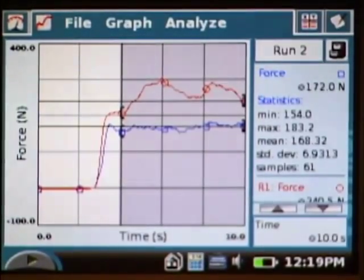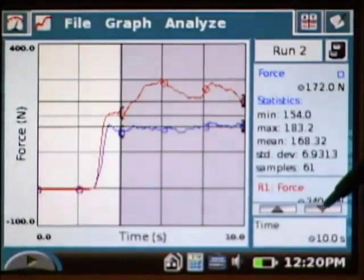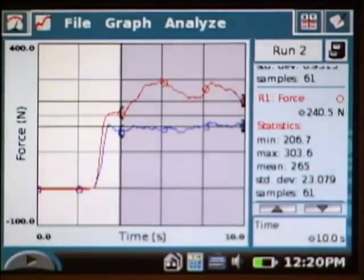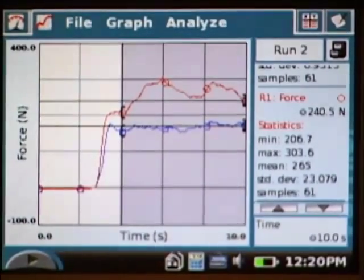The value I'm most interested in for this particular one is the mean, which is the average applied force. You can see there is a value of 168 for run 2. In run 1, my mean was 265. That much of a difference would indicate a dominance in the right hand, which since I'm right-handed makes sense and I have better strength in my right hand than my left.